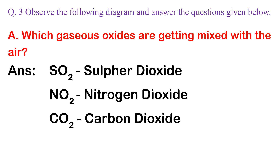A. Which gaseous oxides are getting mixed with the air? Answer: SO2 (sulfur dioxide), NO2 (nitrogen dioxide), and CO2 (carbon dioxide).